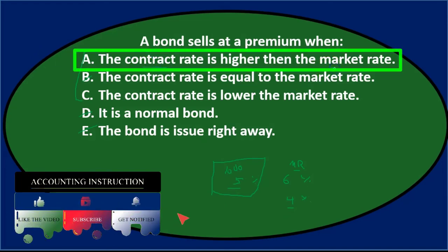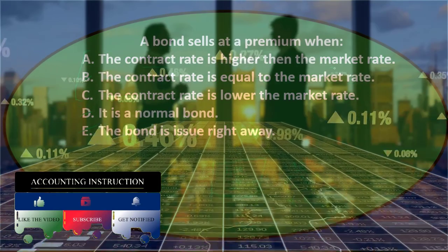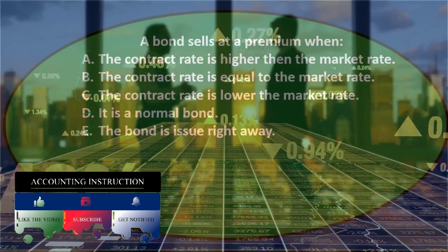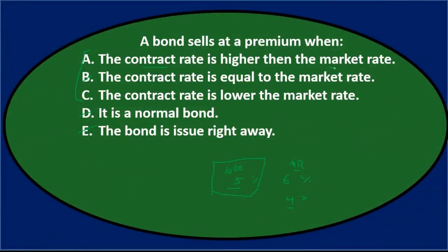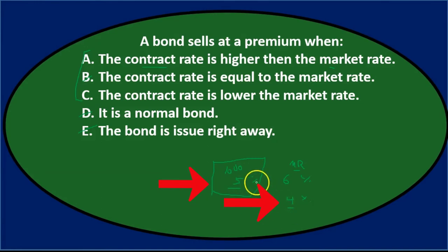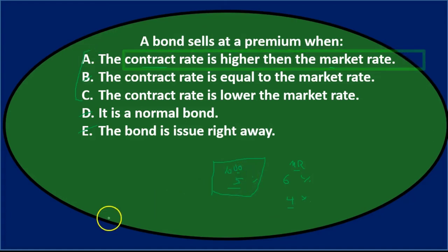So the answer is a: the contract rate is higher than the market rate. When the bond rate is higher than the market rate, the company is paying more back on the investment than an investor could find elsewhere. Since we can't change the contract rate to match the market rate, what happens instead is that the price increases above the face amount of the bond — that's the premium.